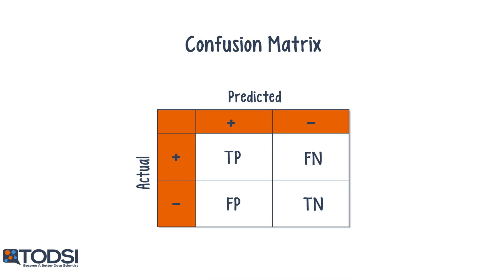True negatives and false negatives are defined similarly when the model makes a negative prediction. If the number of occurrences of these four values are placed in a 2x2 grid, we form a valuable tool known as a confusion matrix. Each square in the matrix is a placeholder for a value, so the values are not related to any particular square's visual size.